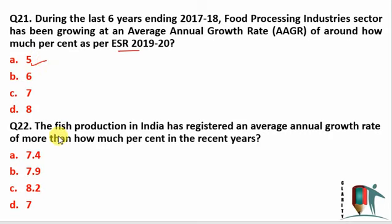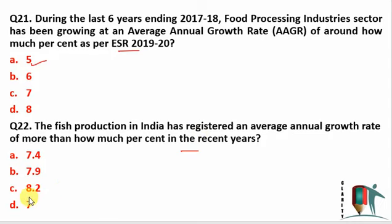Next question: fish production in India has registered an annual growth rate of more than how much percent in recent years? It has made quite a large jump in growth, and the growth rate is around 7 percent. So 7 percent is the right answer.